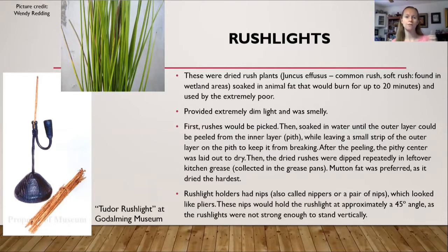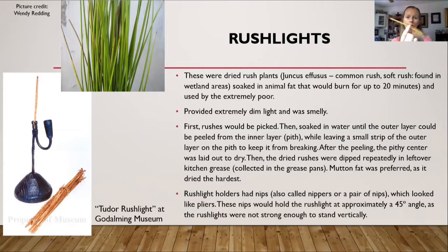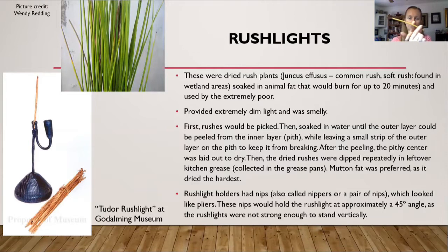If you look at the picture on the left, this gives you an idea of how rush lights were used. You would have what was called a nip — also called a pair of nips or nippers — think of pliers that hold something simple and small. This is actually a beeswax candle, but just imagine my fingers being a pair of nips, and you would hold the rush light like this. Rush lights were not strong enough to stand vertically, so you would actually hold it at a 45-degree angle. You would pinch it, light the end, and then every so often you would have to move your rush light up through the pair of nips as the fire burned down.